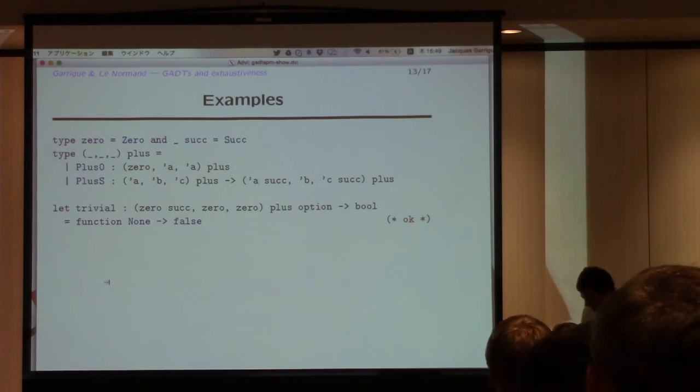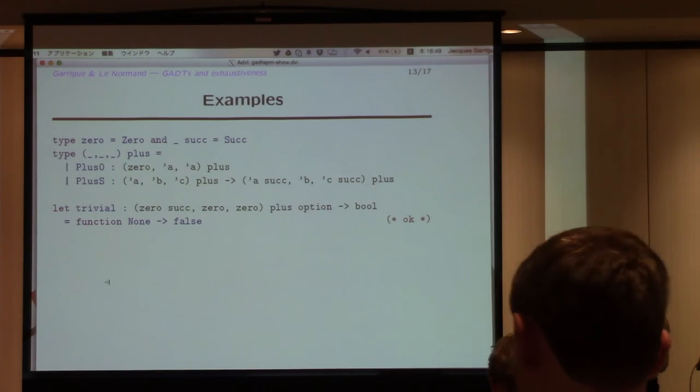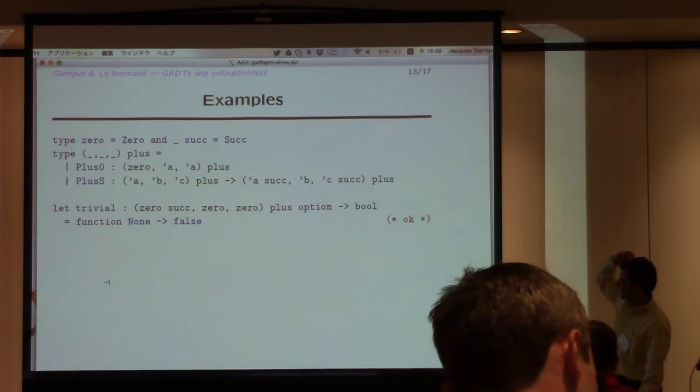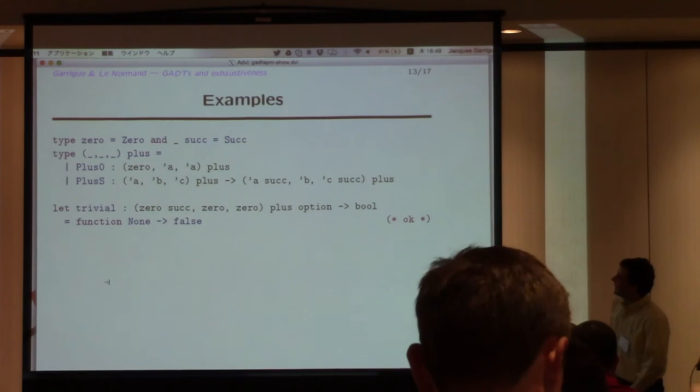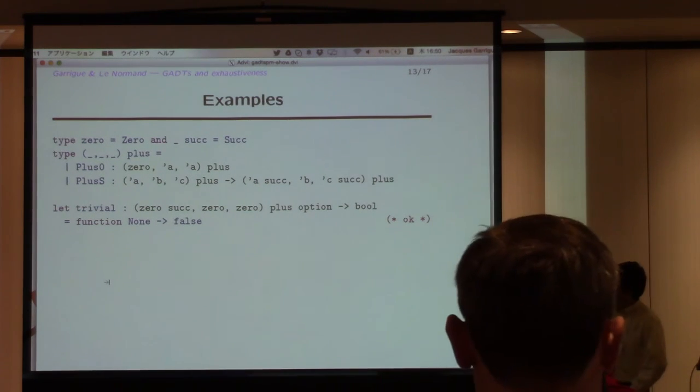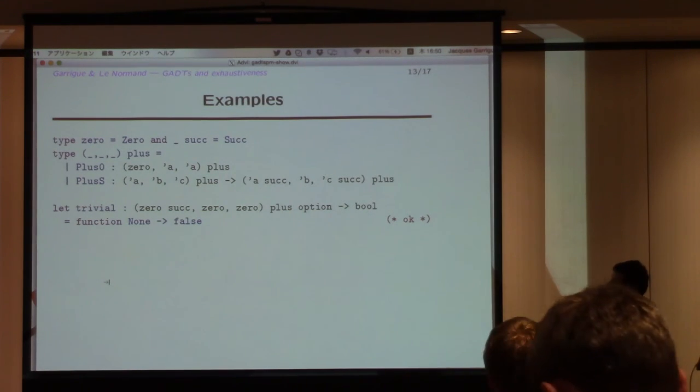So let's look at a few examples about how this works in practice. So these examples are mostly proof-related. Here, trivial case. Suppose that I have the relational definition of addition here, and the trivial case is, is it possible to add one, zero, and is the result of adding one, zero, zero? Well, of course not. Actually, it does not match any of the cases. So it means that only none is exhaustive.